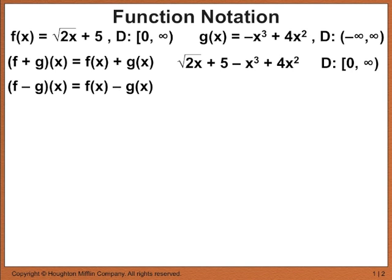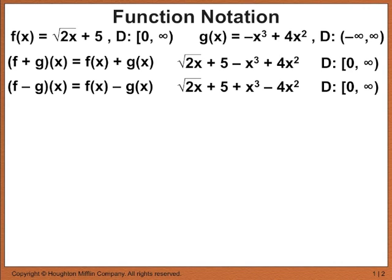f minus g of x is the same as f of x minus g of x. Pause the video, come up with what f of x minus g of x is, and also the domain. You should get square root of 2x plus 5 minus the quantity negative x cubed plus 4x squared. When you distribute the negative sign, you get positive x cubed and negative 4x squared. The domain is still the interval 0 to infinity, because we're limited by the 2x under the radical.